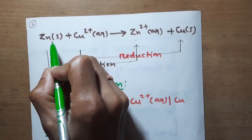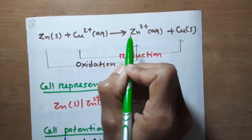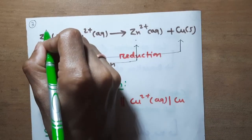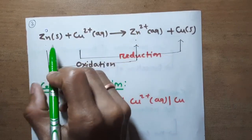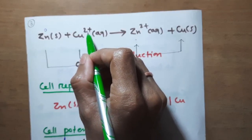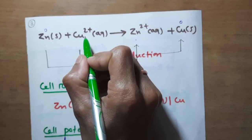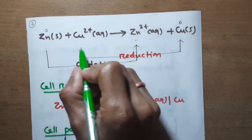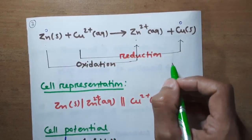If you closely observe this overall reaction, you will see it is a redox reaction. The oxidation number of zinc is increasing from 0 to plus 2, meaning zinc is oxidized, and the oxidation number of copper is decreasing from plus 2 to 0, meaning copper is being reduced. So the overall reaction involves both oxidation and reduction — it is a redox reaction.